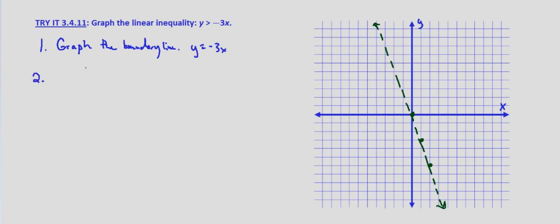So the second step is, again, test points. Technically I only need to test one point, but I always try to test on both sides to make sure I didn't make a mistake. So let's test negative 1, 0.